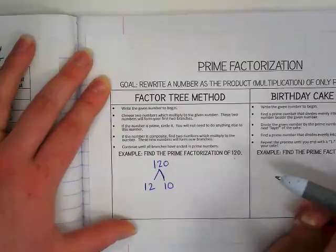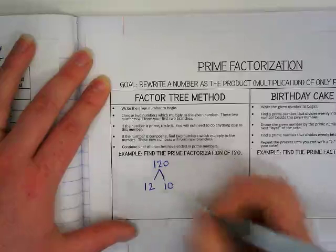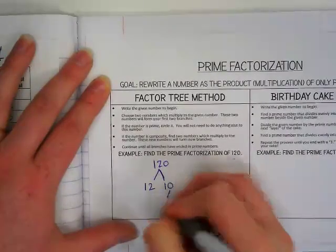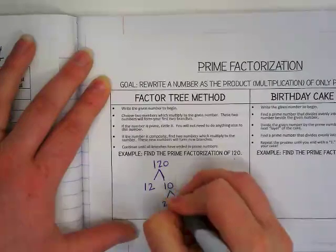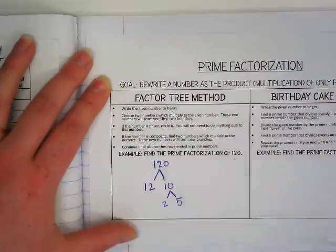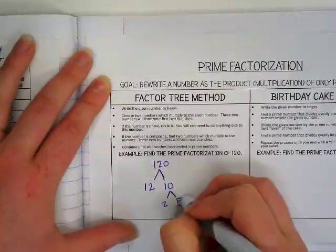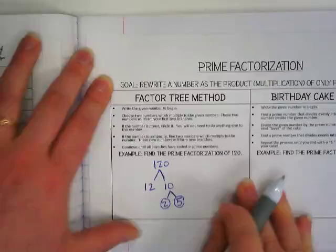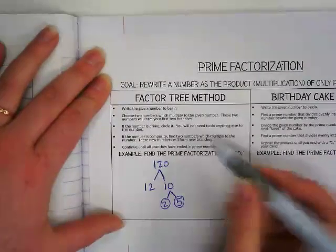Let's start with 10. What are two factors of 10? 5 and 2. And Preston says they are both prime, so we're going to circle them because they are prime numbers.